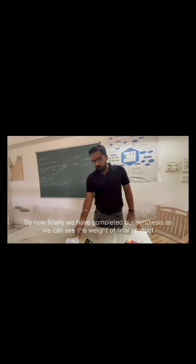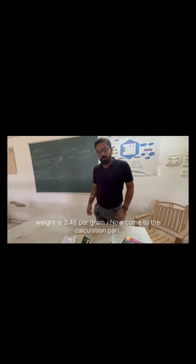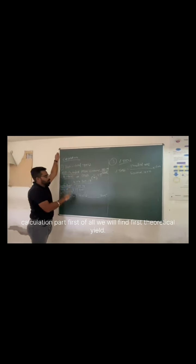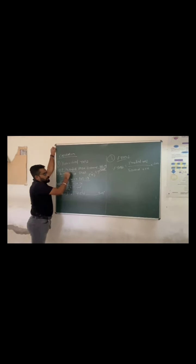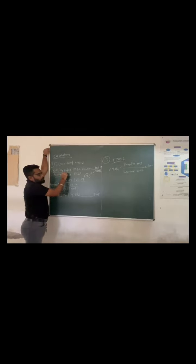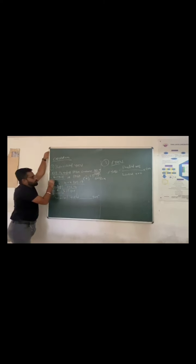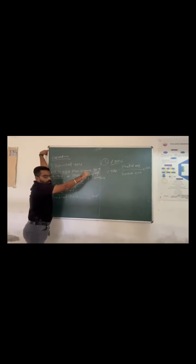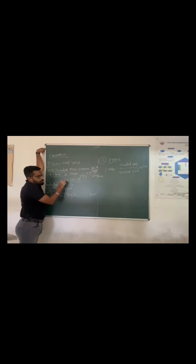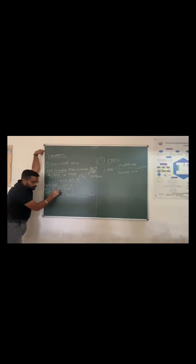Finally, we have completed our synthesis. As we can see, the weight of the final product is 3.464 grams of benzocaine drug. Now come to the calculation part. First of all, we will find the theoretical yield. The molecular weight of Para-Amino Benzoic Acid is 137.14 g/mol, and the molecular weight of benzocaine is 165.19 g/mol. So, 4.0 grams of PABA — we calculate: 4.0 × 165.19 / 137.14. Our final theoretical yield of benzocaine is 4.81 grams.